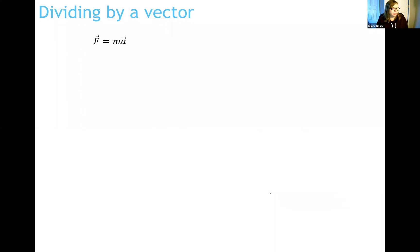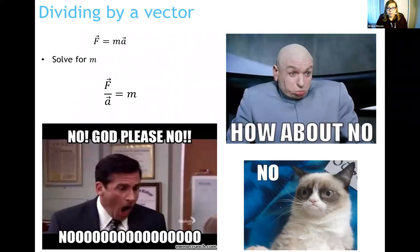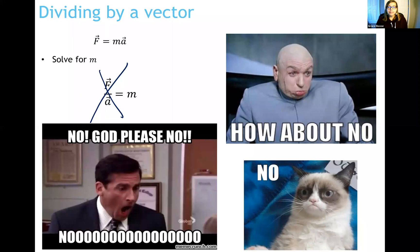The last thing: dividing by a vector. If you have vector F equals scalar m times vector A and you want to solve for m, you might instinctively try to divide by vector A — but no, you are not allowed to divide by a vector. That operation does not exist. Vectors should never be in the denominator of a fraction. We'll cover other ways of solving such equations. Those are all the basic vector operations done graphically, and we'll go on to other methods of dealing with vectors in another video.